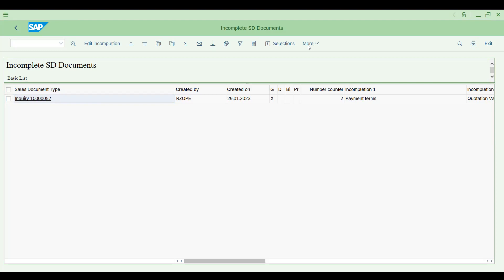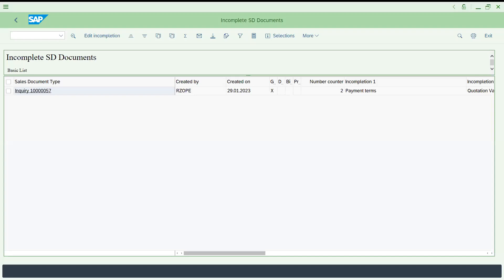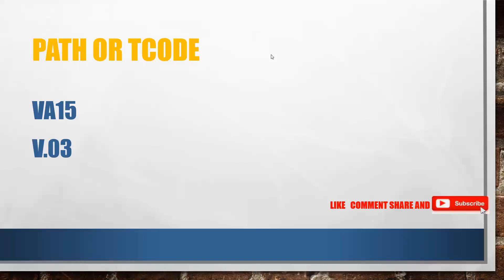In the next session we'll cover the same concepts for quotations. So to summarize: you now know how to get a list of enquiries — open or completed — using VA15, and how to get the incomplete enquiry list using V.03 and reprocess them. If this was helpful, please like, comment, and share with friends, and subscribe for more videos.